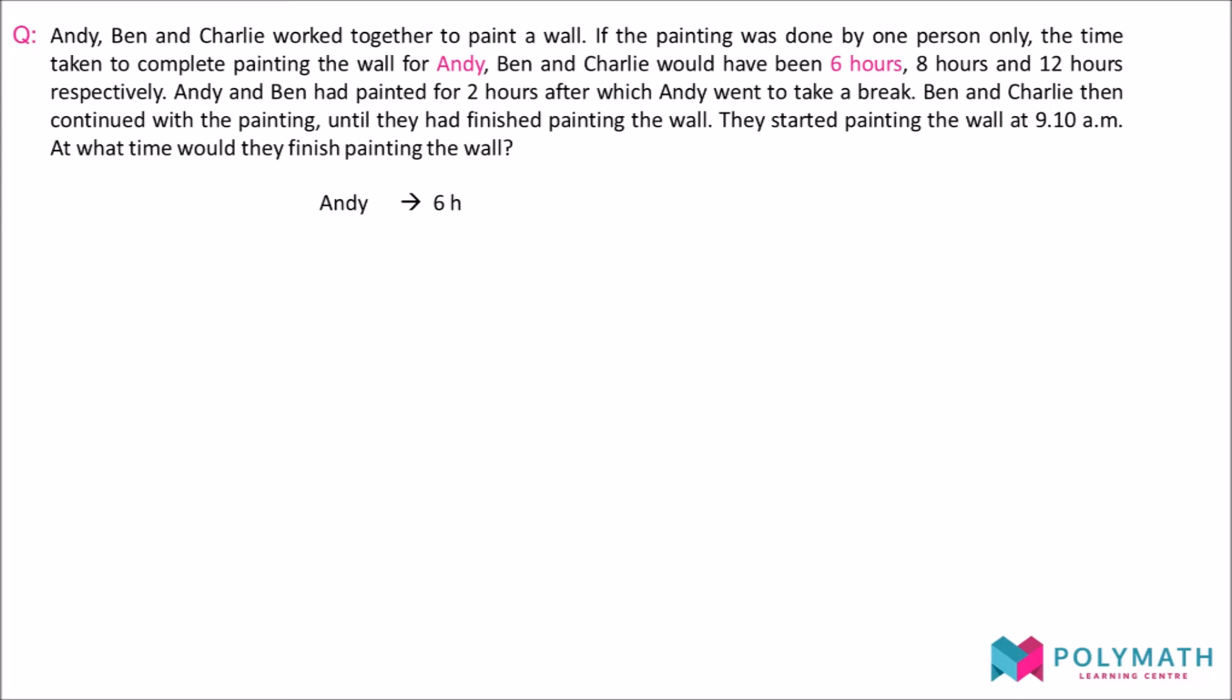Moving on to the solution, we are first given the time taken for 3 people to complete painting a wall if they had worked alone. Andy will have taken 6 hours, Ben will have taken 8 hours and Charlie will have taken 12 hours. Now, how can we use this information to help us answer the question?